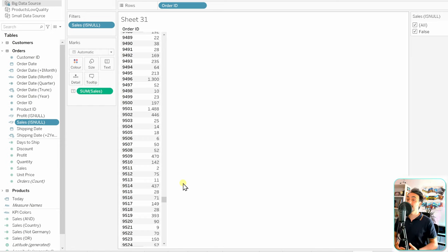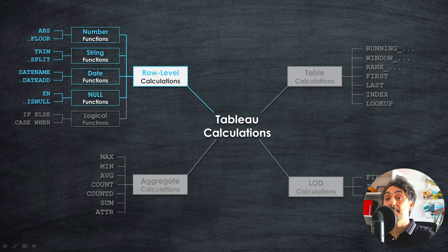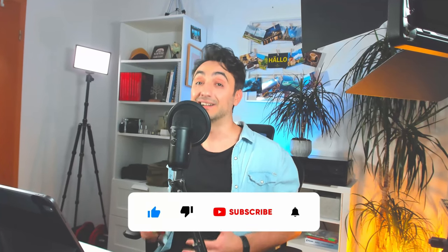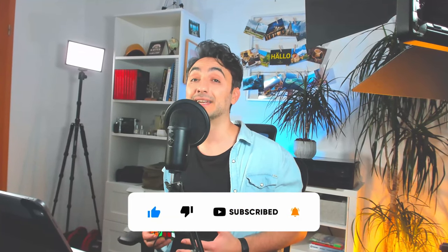With that, we've covered all three functions that deal with nulls: ZN, IFNULL, and ISNULL. This is very important to improve the quality of your visualizations and bring accurate data to aggregations. Next, we'll move on to another group of functions — the logical functions. If you like the content, please like, comment, and subscribe. Thank you for watching, see you in the next video!